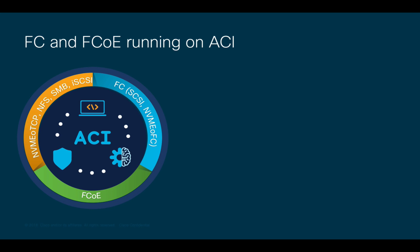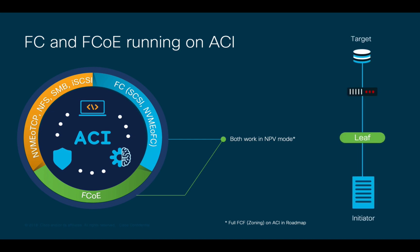In this chapter, we will focus on the configuration steps to successfully implement FCoE and native Fiber Channel on ACI. As of ACI 5.2, both protocols are implemented running in N-port virtualization mode, also known as NPV. What NPV mode means is that when you connect a server or initiator to your ACI leaf, the fabric login process, also known as Floggy, which sends the initiator's worldwide name, will be forwarded to a Fiber Channel switch or director, such as an MDS, Nexus 9K running NX-OS, or Brocade switch.